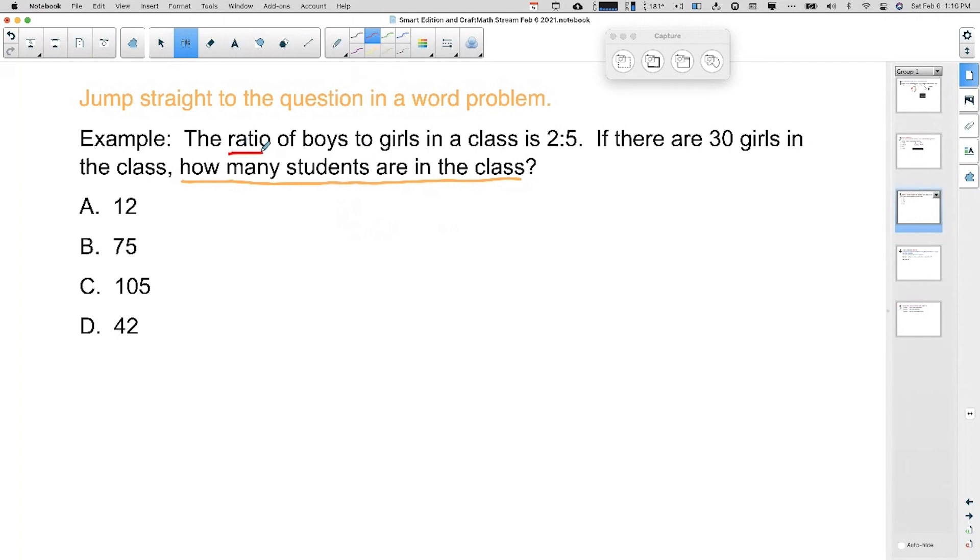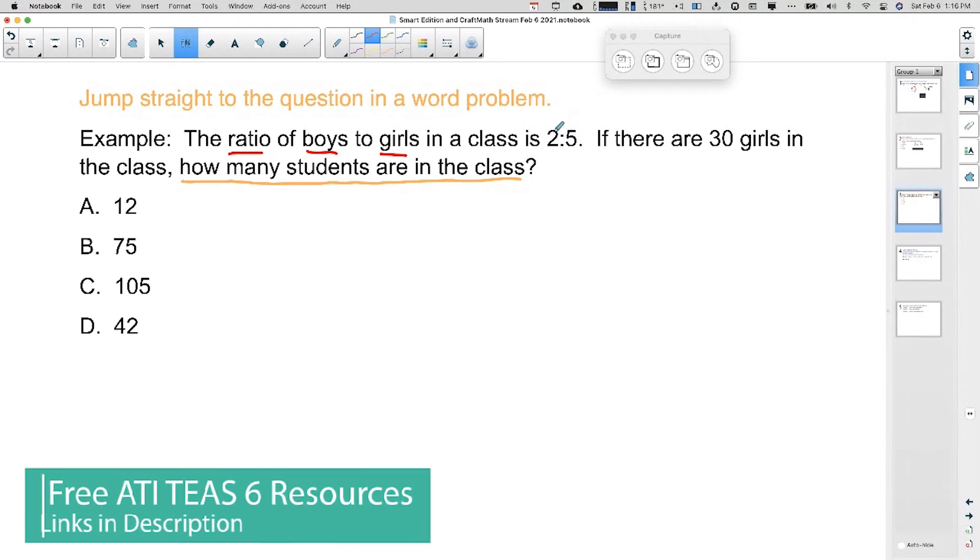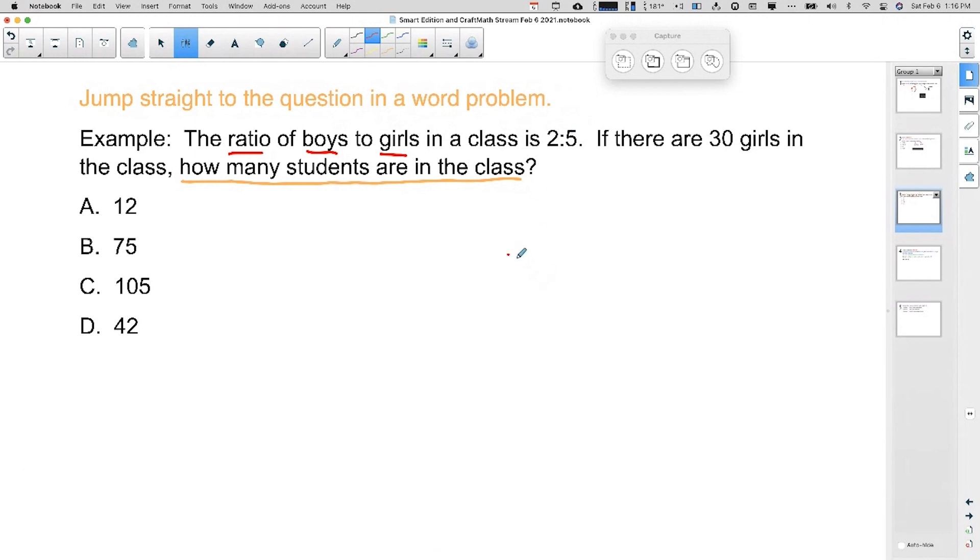Now ratios, ratio of boys to girls, the order does matter. Boys is first. Girls is second. Therefore, the two represents boys and the five represents girls. Sorry about the background noise, we have a big dog barking, but boys to girls, two to five. So two over five. I am setting up this ratio as a fraction. The two represents the boys. The five represents the girls.